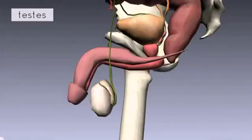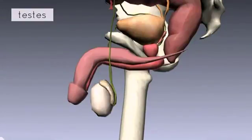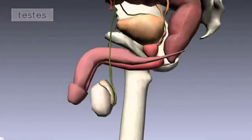In utero, the testes actually descend from the abdominal cavity via the inguinal canal and they enter into the scrotum. We're going to switch over to a diagram of the testes and look at it in section and talk through some of the key structures to know about.